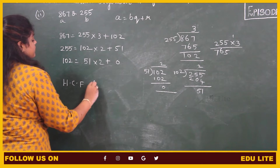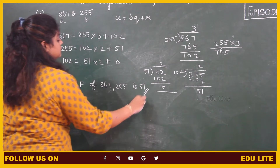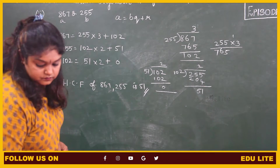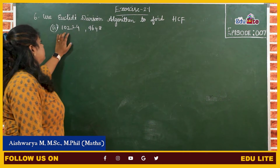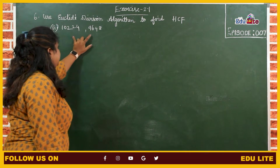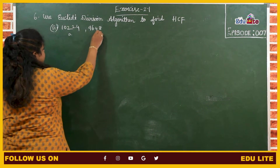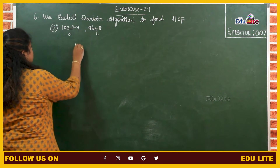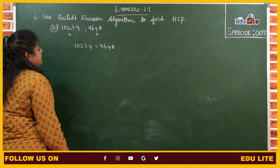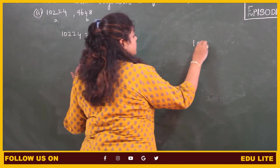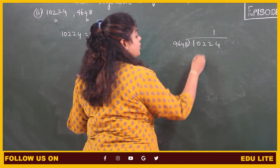Now we have to find the HCF of 10224 and 9648. The highest number is 10224 — this is the value of A, and 9648 is the value of B. Therefore, applying Euclid's division lemma, 10224 equals to 9648. We have to find the quotient and the remainder. Let us divide 10224 by 9648 — we can do it with only 1 time.